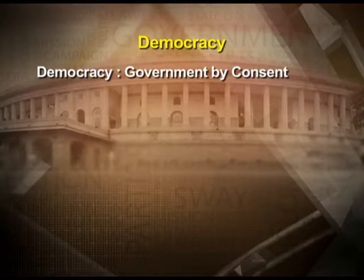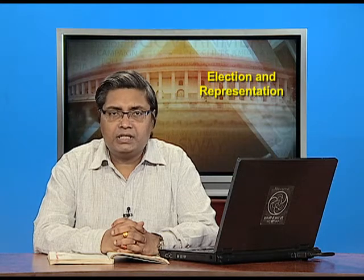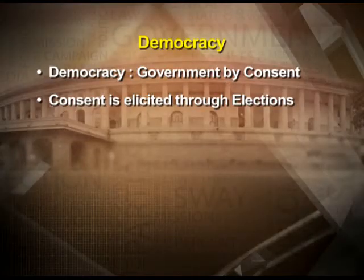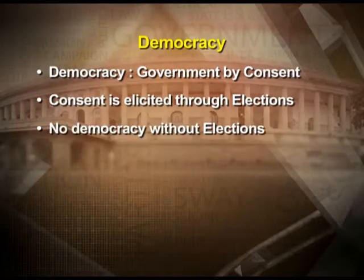Whose consent? The consent of the governed — meaning the people. So how is consent elicited? How is consent found? How is it received? Consent is elicited through periodic elections. In some countries it is four years; in India it is five years. So consent is elicited through elections, and there can be no democracy without elections.